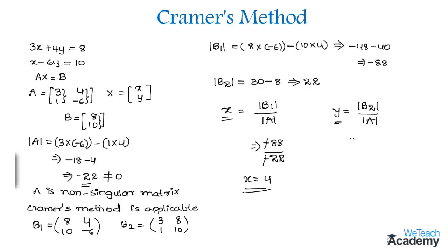The value of |b2| is 22 divided by |A| which is -22. Simplifying, we get -1/1, which equals -1. So the value of y is -1. Therefore the solutions are x = 4 and y = -1.